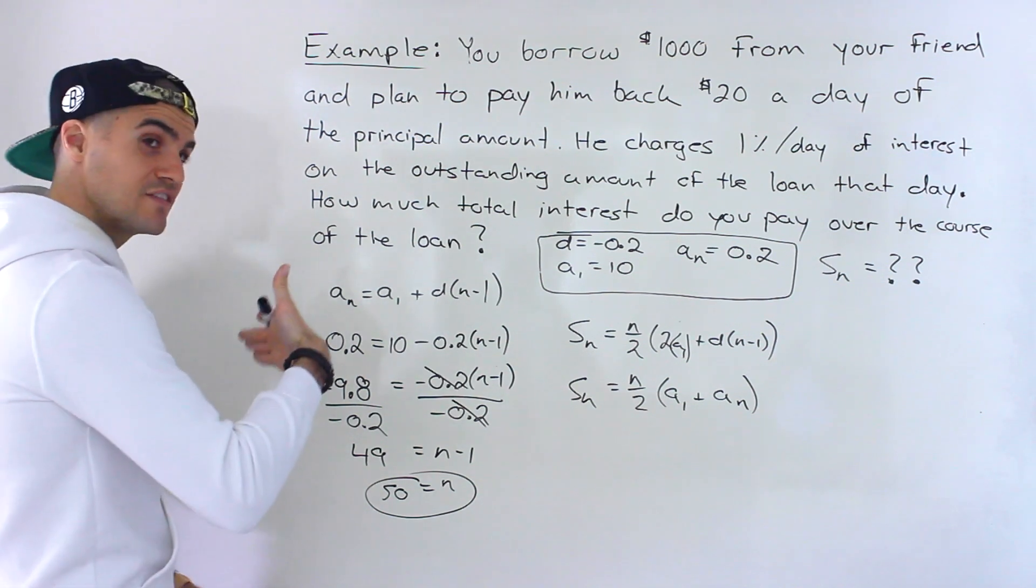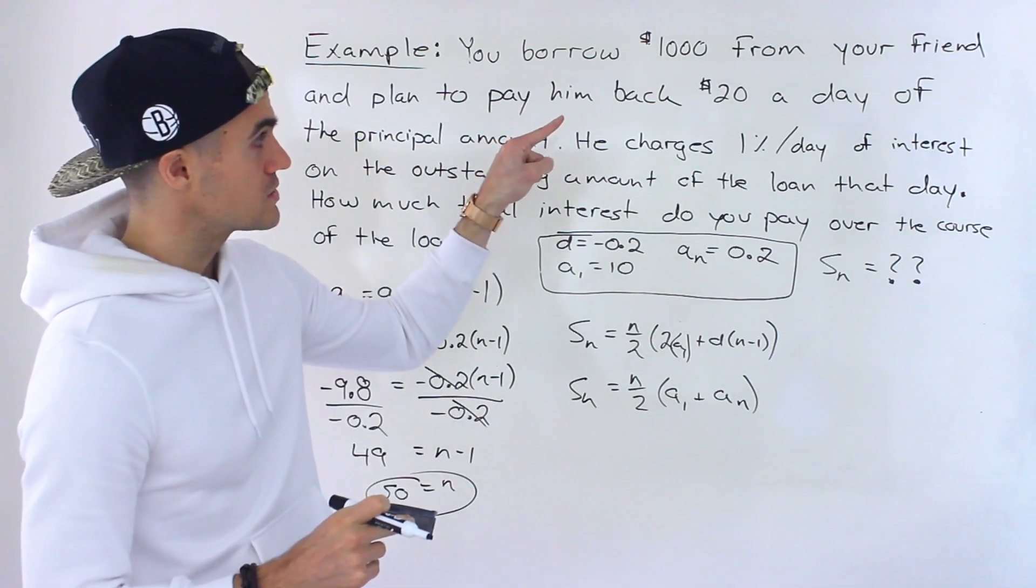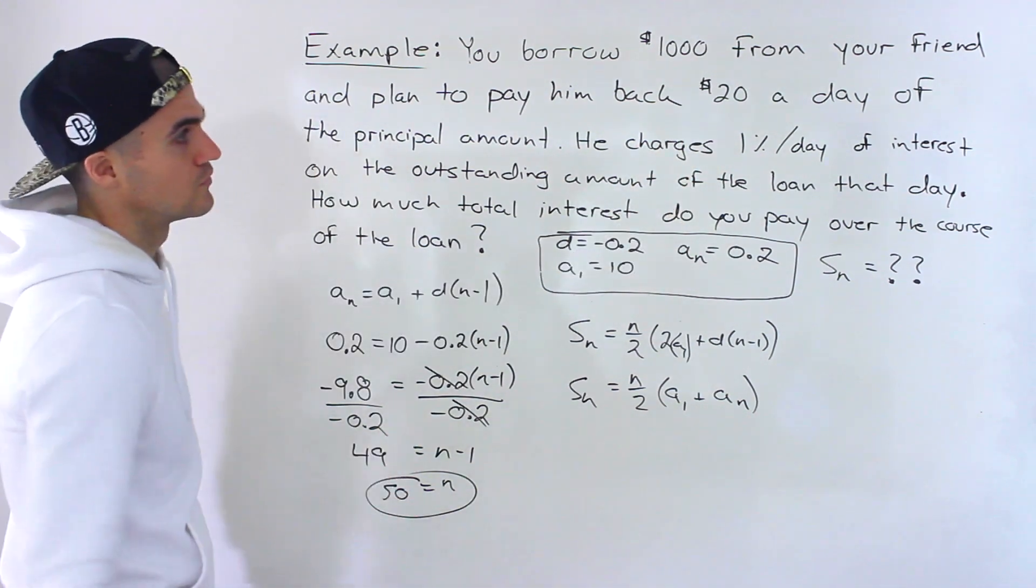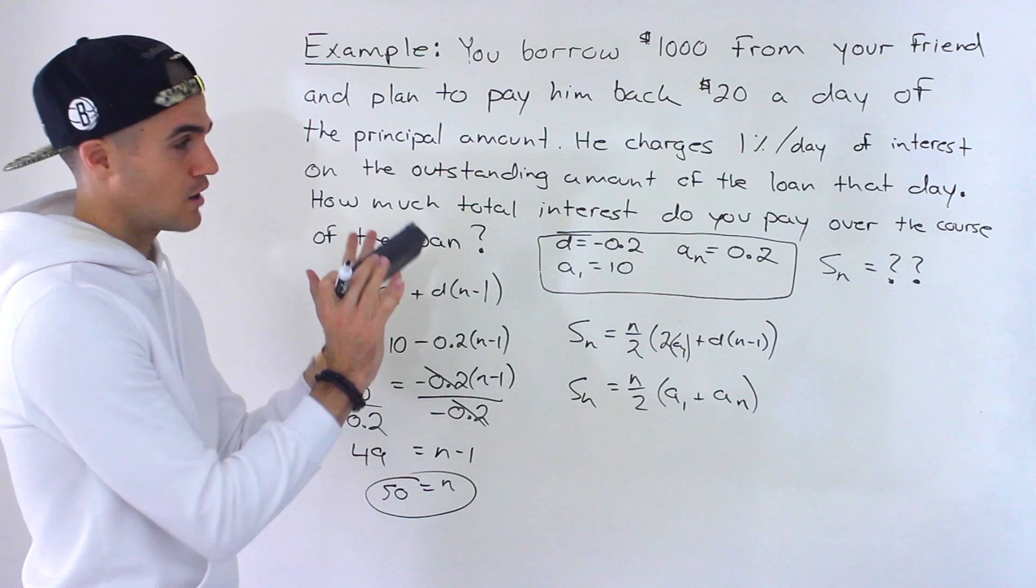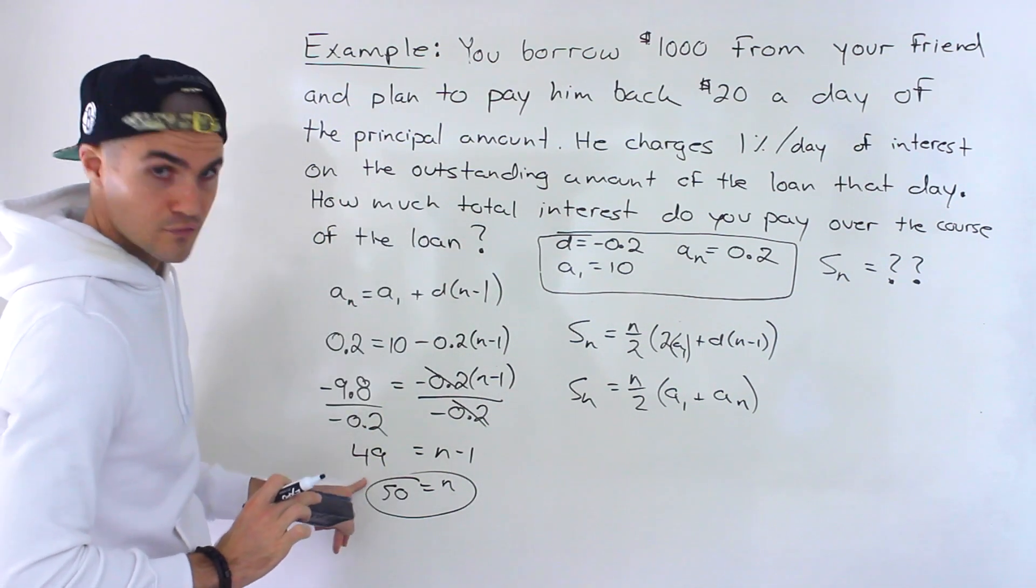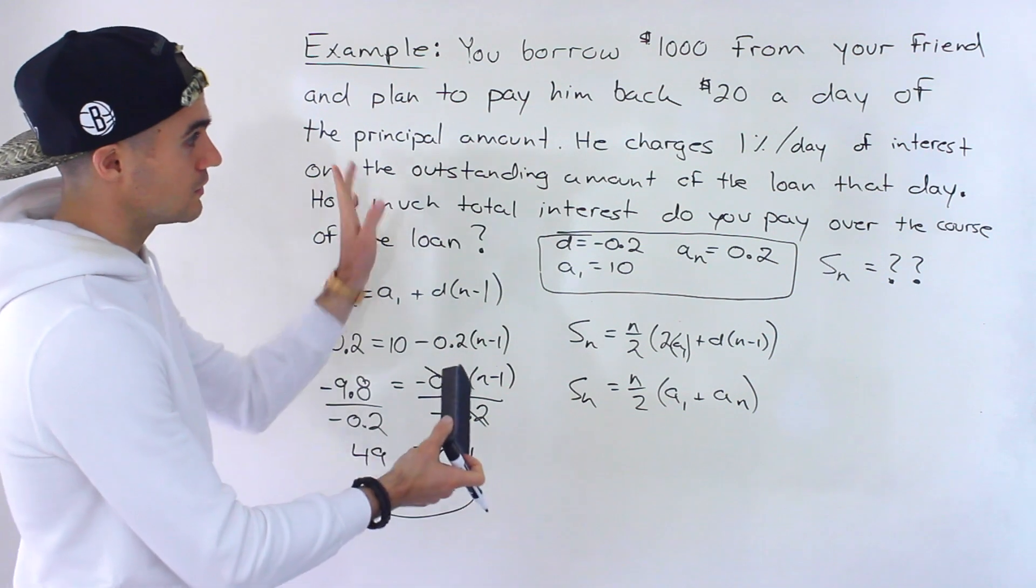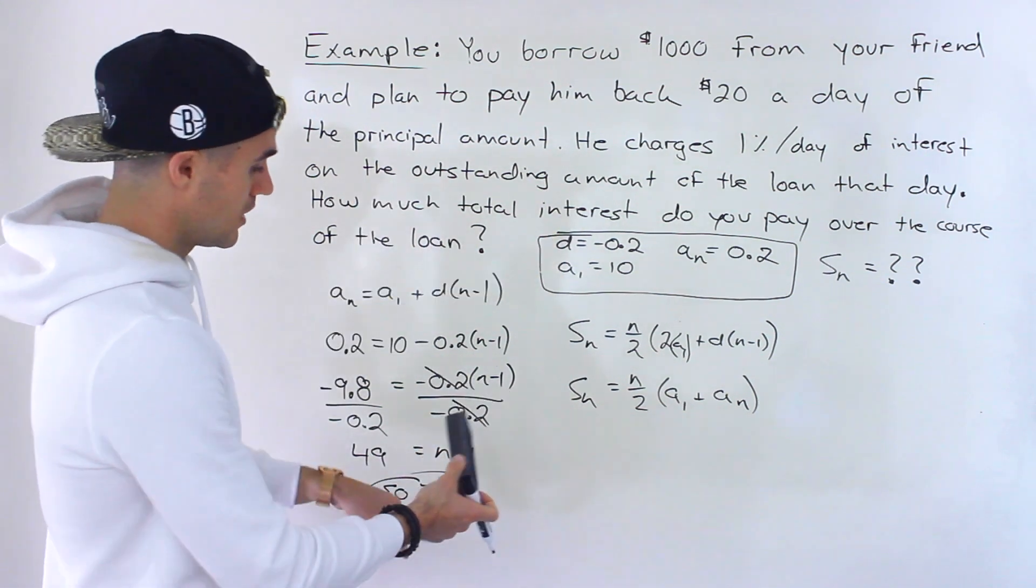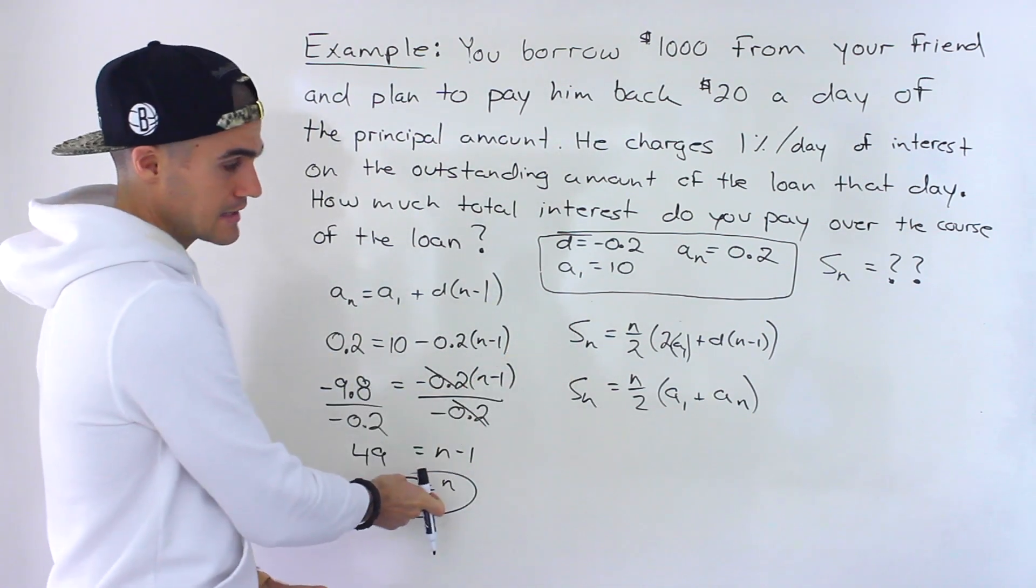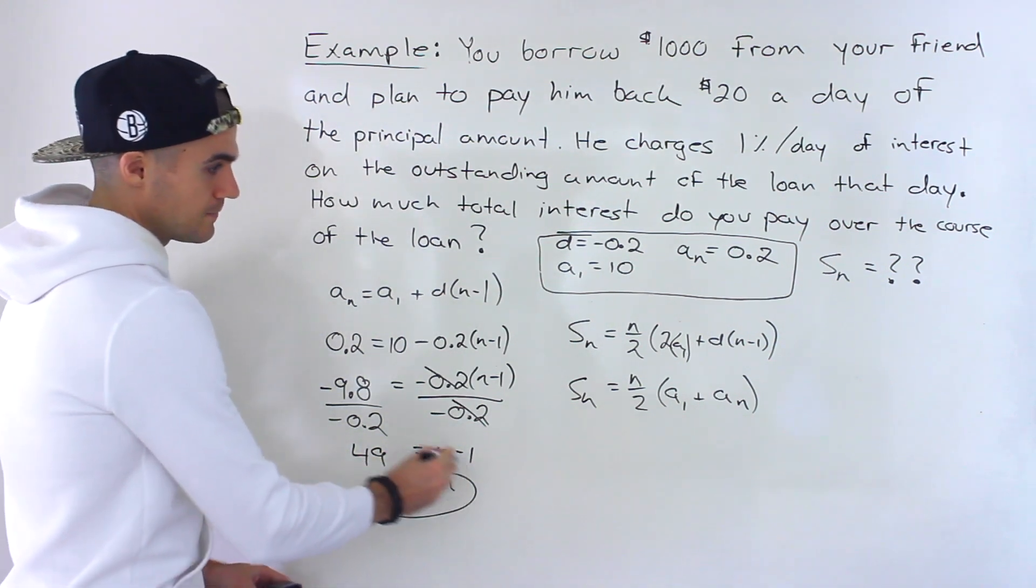So there's going to be 50 interest payments. And that makes sense because you borrowed $1,000. You're paying back 20 a day. 1,000 divided by 20 would give you 50. But sometimes the numbers aren't going to be as obvious as this. So just wanted to go through this process of solving for that. Sometimes they'll even tell you there's going to be 50 payments, or maybe it won't be till the loan is fully paid off. So maybe they'll say how much interest did you pay over 30 payments. Then the n would be 30. But in this case, we calculated the n, it's 50.